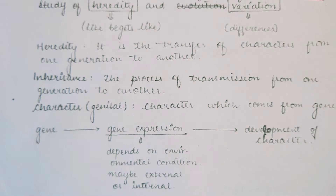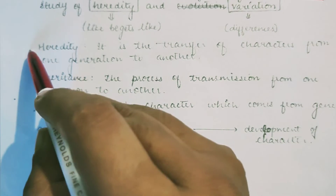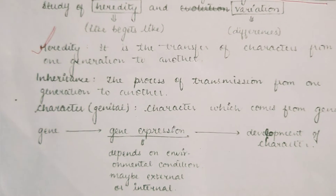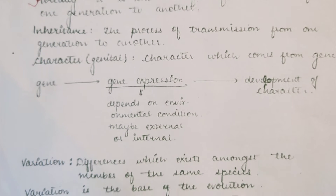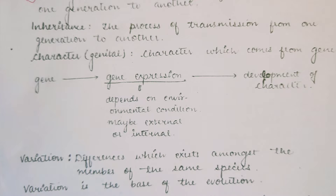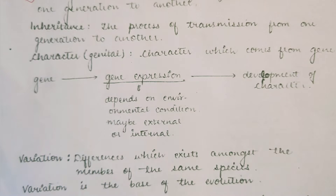Heredity is the transfer of characters from one generation to another generation. Inheritance and heredity are the same — they are synonyms. Characters are also known as traits, which are present at specific locations called loci or locus. Locus is singular; loci is plural. One or more characteristics have alleles present at those loci.